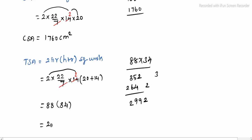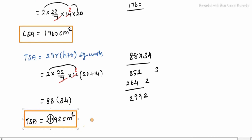Finally, we get 2,992 centimeters square. This is the total surface area. Anyway, for the drum, curved surface area and total surface area have been found. Thank you.